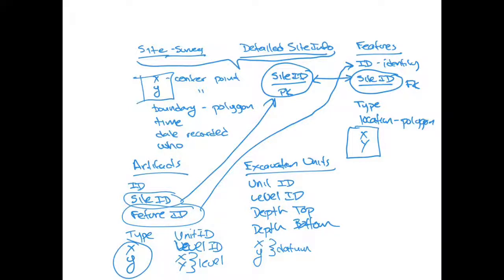Overall, as I've walked through this process of identifying what attributes we want to capture as part of this database, you've seen the iterative process — it's not just a straight linear progression. Instead, as I'm working through it, I'm identifying additional variables that I need in each category of information. This process then contributes to what I would develop as a final initial database design to implement this data structure.